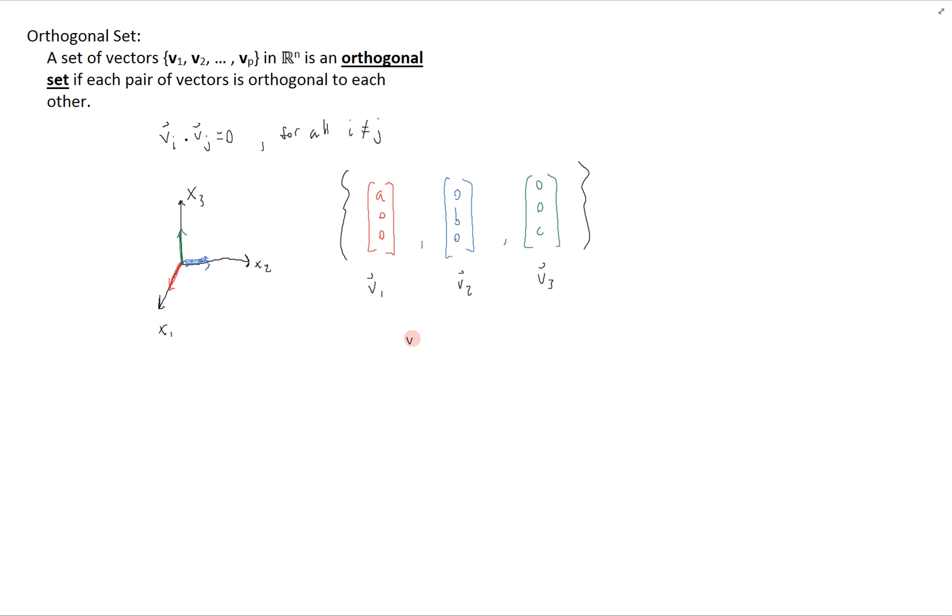It's an orthogonal set because V1 dot V2 is equal to 0, V1 dot V3 is equal to 0, and V2 dot V3 is also equal to 0. And that is the definition of an orthogonal set.